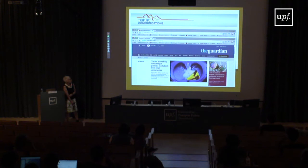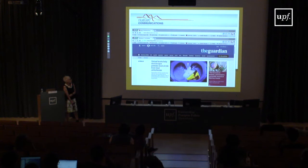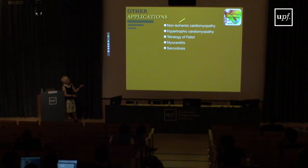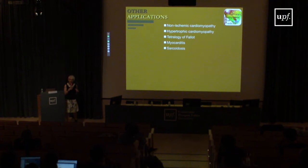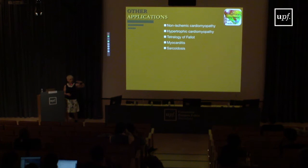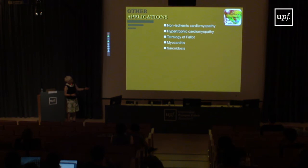We are broadening the scope of diseases: from ischemic cardiomyopathy to non-ischemic cardiomyopathy, hypertrophic cardiomyopathy, tetralogy of Fallot — a structural congenital heart disease where repaired patients develop fibrosis in the septum that becomes arrhythmogenic over time — as well as myocarditis and sarcoidosis. For some of these diseases we combine multiple imaging modalities; for sarcoidosis, PET scans are particularly useful for identifying inflammation, and we merge that with MRI to construct three-dimensional patient models.